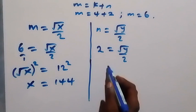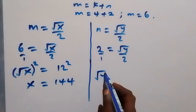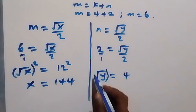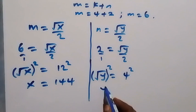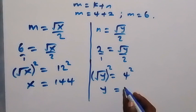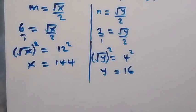Also from n equals √y over 2, substituting n = 2: cross-multiplying gives √y equals 4. Squaring both sides gives y equals 16. So the value of x is 144 and the value of y is 16.